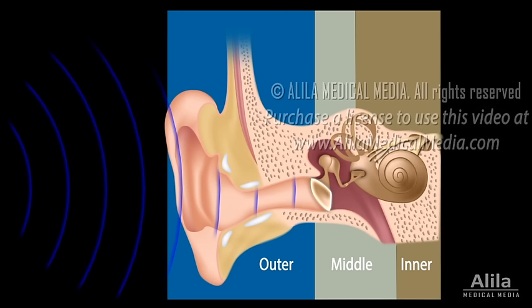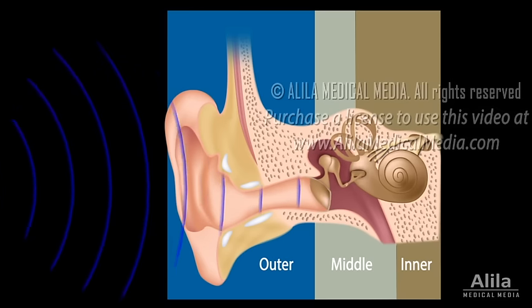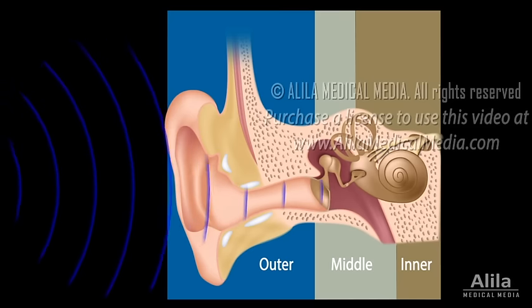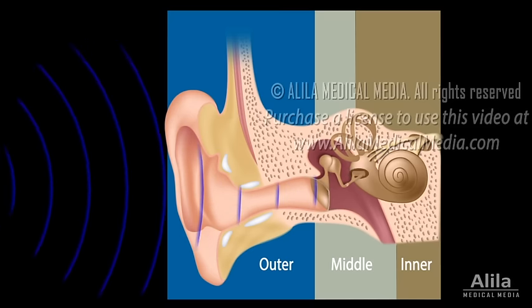The eardrum is attached to a chain of three small bones in the middle ear, called the ossicles — the malleus, incus, and stapes. Sound waves cause the tympanic membrane to vibrate, and the vibrations are transmitted through the three bones to the oval window, where the inner ear begins. Since the eardrum is much larger in area than the oval window, the sound pressure that arrives at the oval window is much greater than the original pressure received by the eardrum.